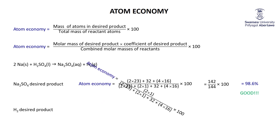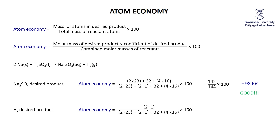Conversely, if H2 is our desired product, the atom economy is just 2 (molar mass of H2) divided by 144 times 100, giving only 1.4%. That means 98.6% is wasted — a very poor use of this reaction for making H2. If we wanted H2, we'd need a reaction with a much higher proportion of H2 in the products relative to starting masses.